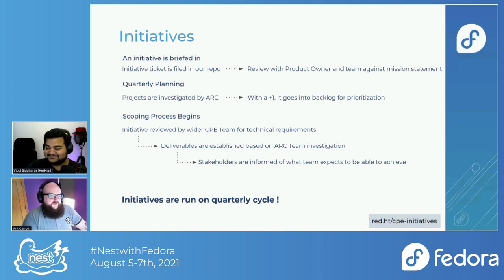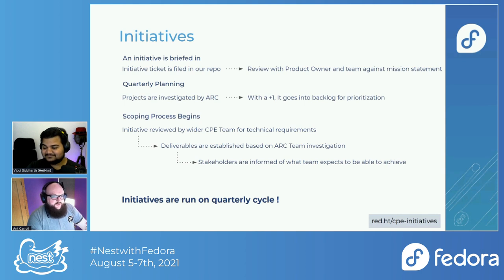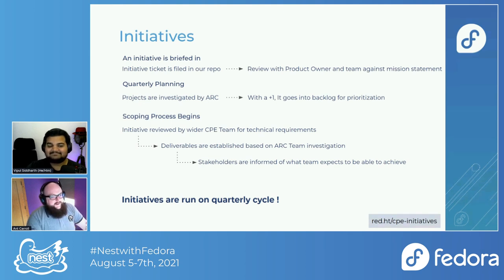The early lifecycle of an initiative looks like this — this is the TLDR version; there's a link in the bottom right of the slide for more specifics. Once a ticket's been filed into the repo, it's reviewed by the project owner and the team against their mission statement. Once all the T's have been crossed and I's dotted, it moves to the ARC team for their investigation. Once it gets the thumbs up from them, it moves to the wider team for technical requirements, establishing what deliverables there can be, and feeding that back to stakeholders.